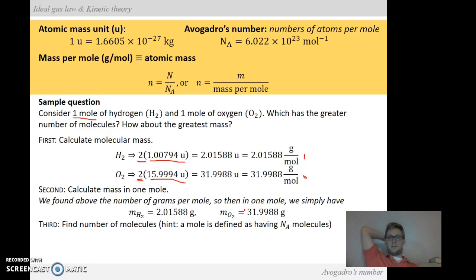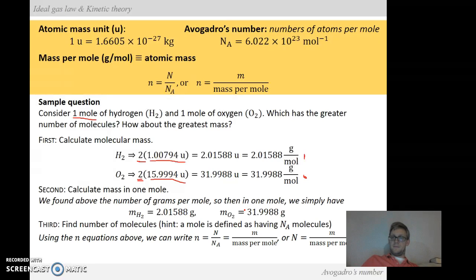And then we can go through and find the number of molecules. Now this is also kind of a trick question because we have one mole of each of these substances and we know that Avogadro's number is defined as the number of atoms in one mole. So therefore we can go through and we can actually use this equation to write it all out. But they each have the same amount of molecules because they are one mole of a substance, but what's different is this mass. So obviously mass of hydrogen is much different than the mass of oxygen. So we know that the one mole of oxygen has more mass than the mole of hydrogen.